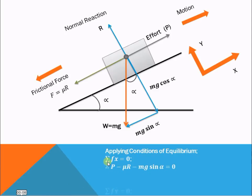The first condition is summation of Fx equals 0. P is positive because it is along the positive x-axis. μR is negative because it is along the negative x-axis, and mg sin α is also negative because it is along the negative x-axis. That equals 0.